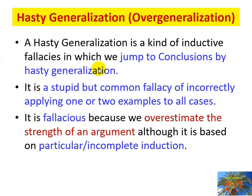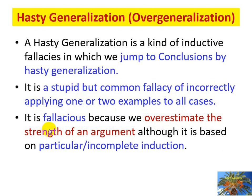The next type of fallacy is the hasty generalization or overgeneralization. A hasty generalization is a kind of inductive fallacy in which we jump to conclusions. It is a common fallacy of incorrectly applying one or two examples to all cases. The overgeneralization lies in applying only a few examples to all cases, which is incorrect.